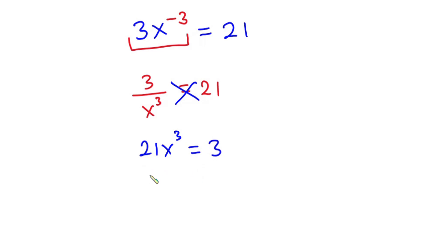Since we are looking for x, let's go ahead and divide each side of the equation by 21. So that this 21 will cancel this. Now we have x to the third power is equal to, now 3 goes into itself 1 and then goes into 21 7 times. So we have 1 over 7.